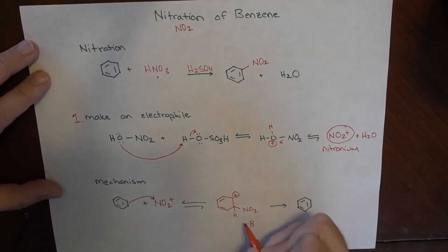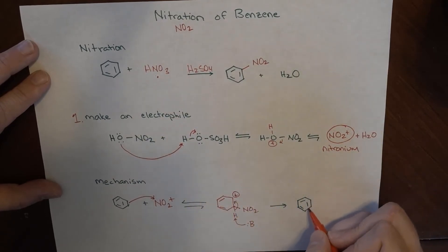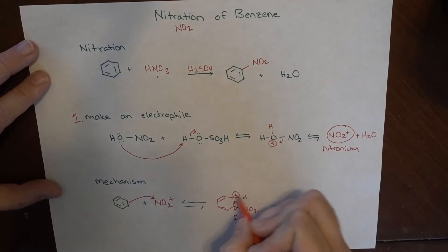Some base that's around grabs onto this H, kicking its electrons back up to here, reforming our aromatic system. We've got our H still there and then our NO2 is here. There was always an H here as well. Just keeping track of things.